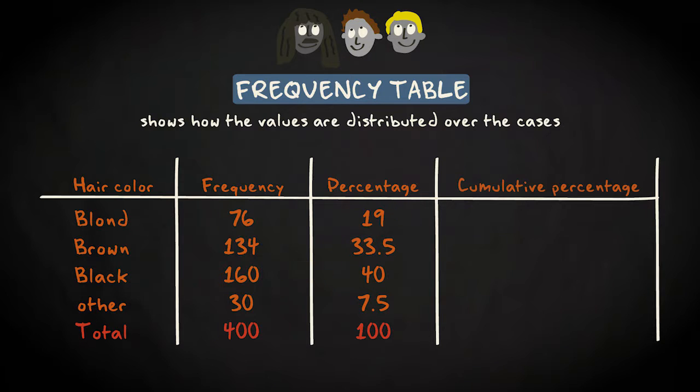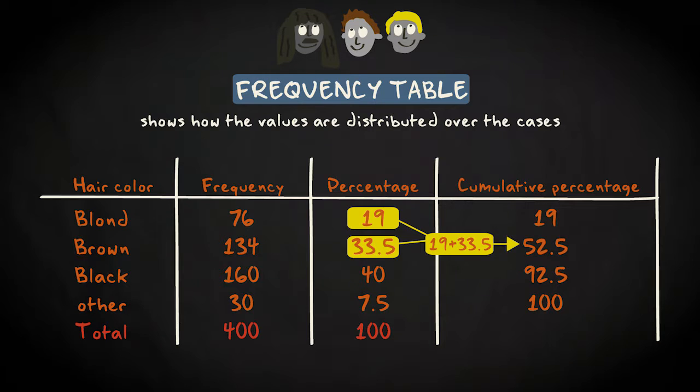Sometimes researchers use cumulative percentages. It is easy to compute them. Cumulative percentages are nothing more than the percentages in every category added up. So you can see here that 19 plus 33.5% equals 52.5% of all players have blonde or brown hair.